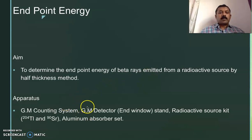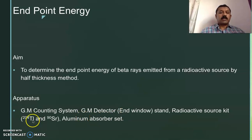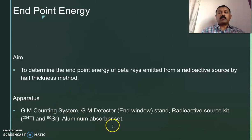These are the apparatus required: a GM counting system, GM detector stand, radioactive source kit, and two beta sources. In this experiment we use two beta sources, that is Thallium-204 and Strontium-90, and we require aluminium absorber sets.